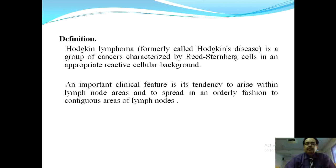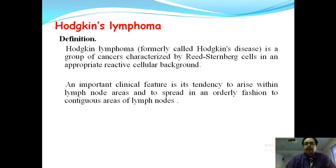The definition of Hodgkin's lymphoma — formerly it was known as Hodgkin's disease but nowadays we call it Hodgkin's lymphoma. It is a group of cancers characterized by Reed-Sternberg cells in an appropriate reactive cellular background. The important clinical feature is its tendency to arise within lymph node areas and spread in an orderly fashion to contiguous areas of the lymph nodes.